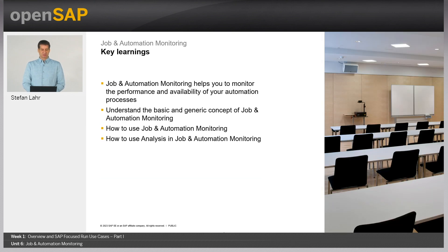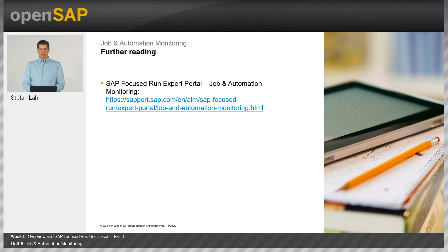The key learnings: job and automation monitoring helps monitor the performance and availability of your automation processes. You should have a good understanding of the basic engineering concept of job and automation monitoring, and know how to use the application and the analysis section to obtain statistical information. Further readings can be found in the expert portal in the job and automation section, including detailed step-by-step instructions for setup and configuration.